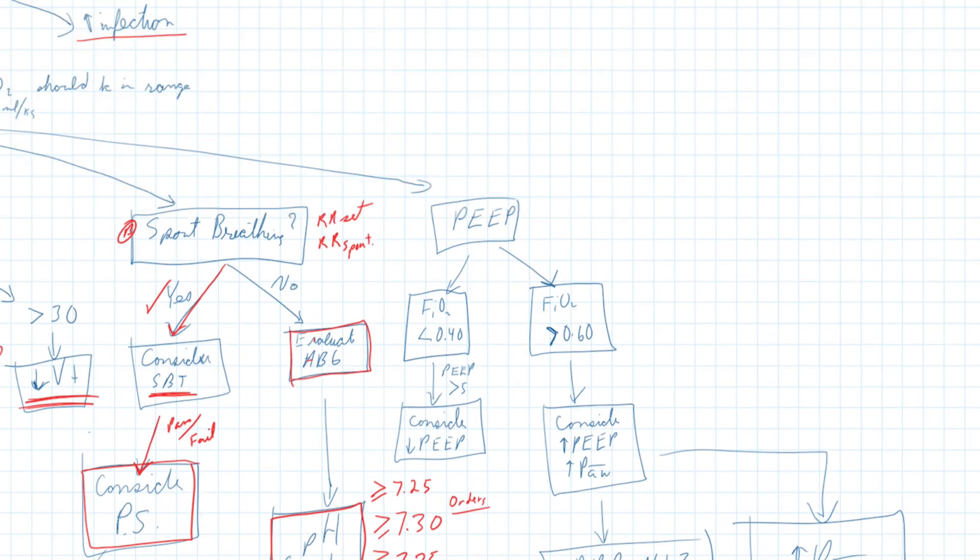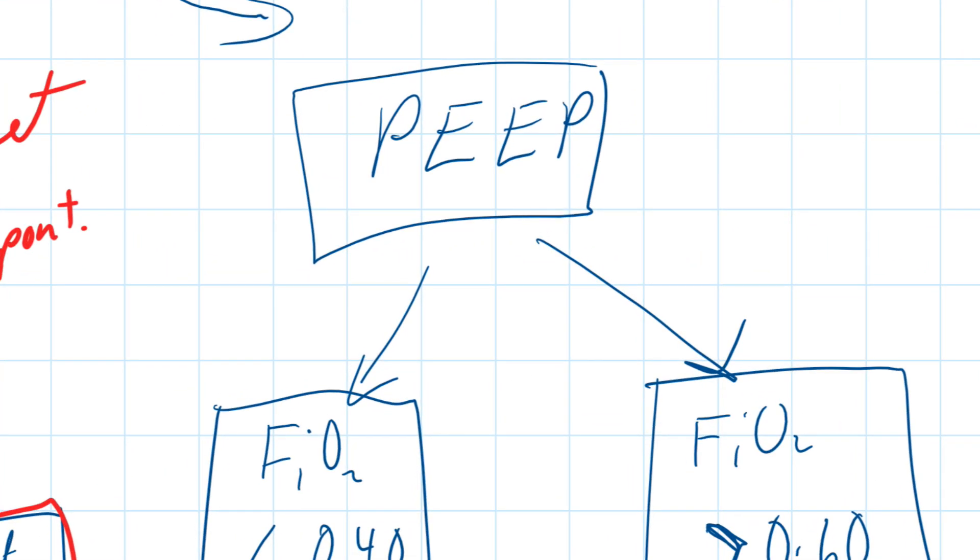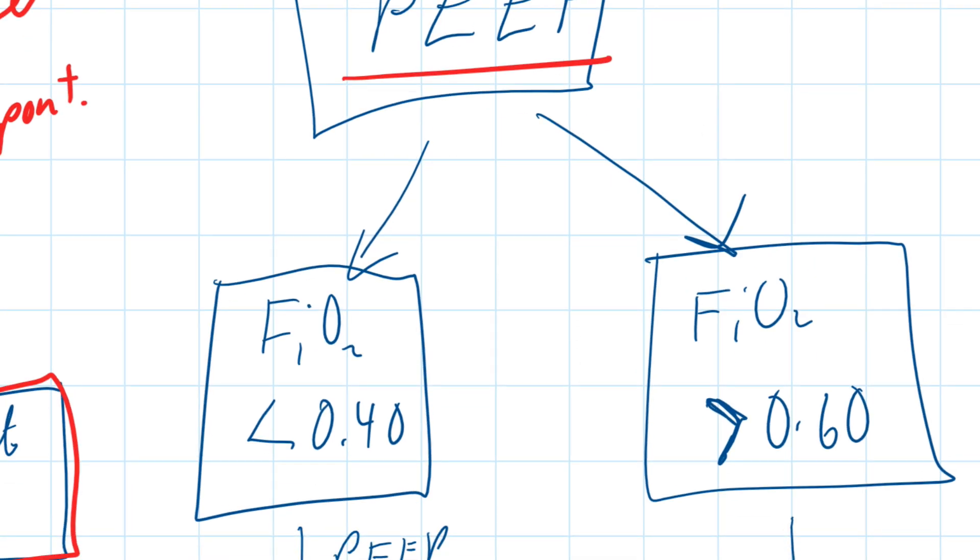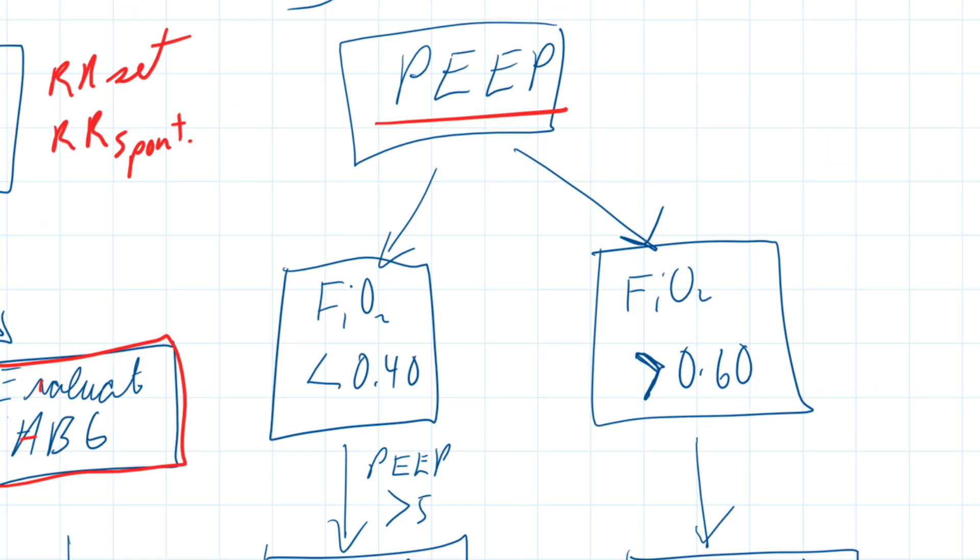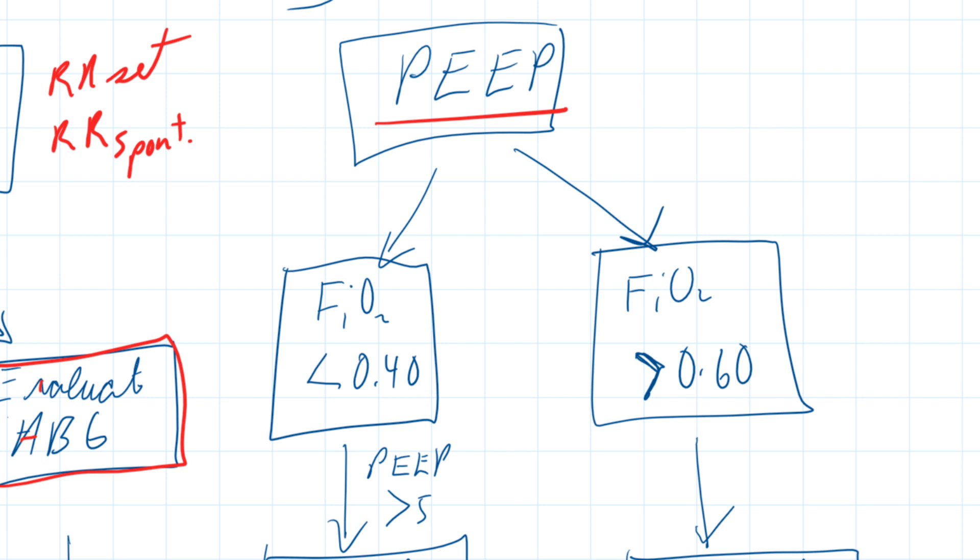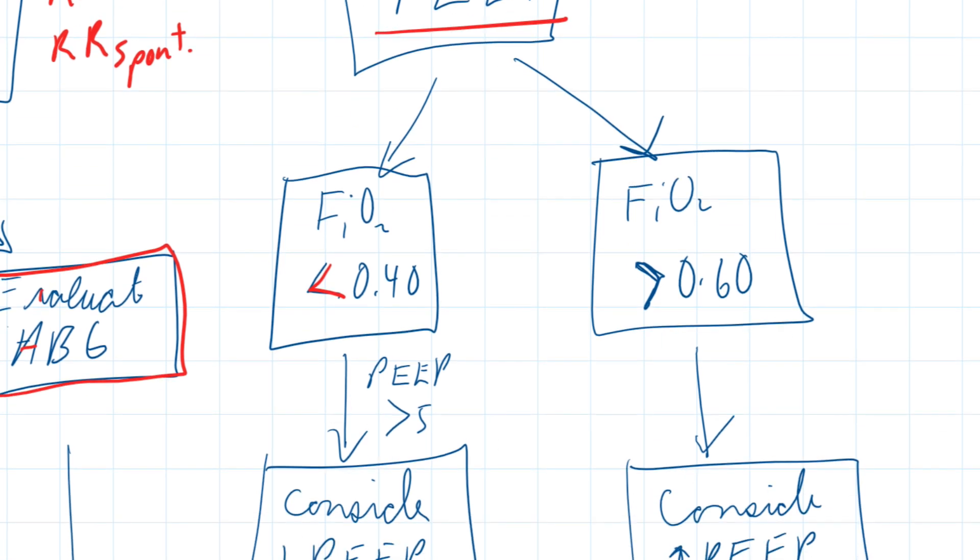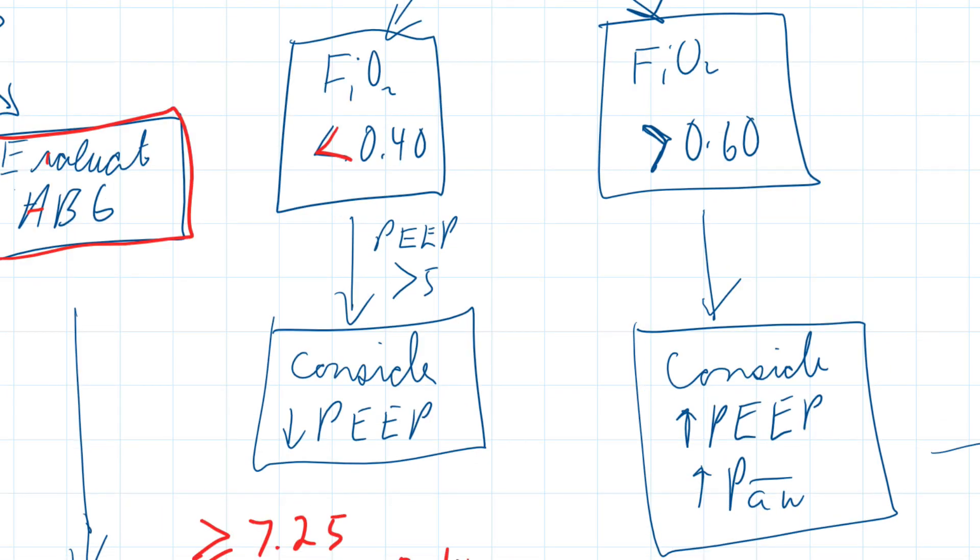The next thing I might look at is my PEEP. And as my PEEP, I'm always considering that in association with the FiO2 that the patient's on at this time. If my FiO2 is quite low, less than 40 percent, maybe I could, and my PEEPs are greater than 5, maybe I'm considering to decrease the PEEP. Maybe I've got too much PEEP on. So that gives me a clue for that.